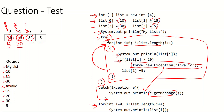So the full output is: my list, 10, 15, 30, invalid, then 15, 20, 30, 5. The key idea: we executed the try block normally through the for loop until an element greater than 20 was found. At that point, throw new exception caused us to exit the try block and go to the catch, where we output 'invalid'. After the catch, the program continued with the remaining statements.